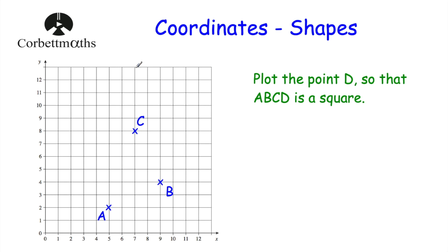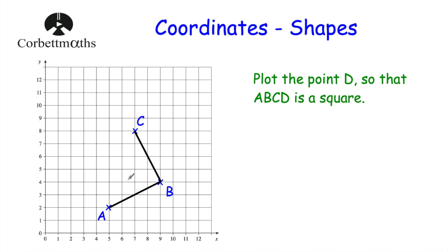Okay, let's have a look at our next question. We've been given this grid and the points A, B, and C, and we've been asked to plot the point D so that A, B, C, D is a square. Remember, a square has got four sides and all four sides have got the same length. I'm going to join up A to B and B to C to begin with, just to join up those two sides of the square, to help me find out where the point D will be.